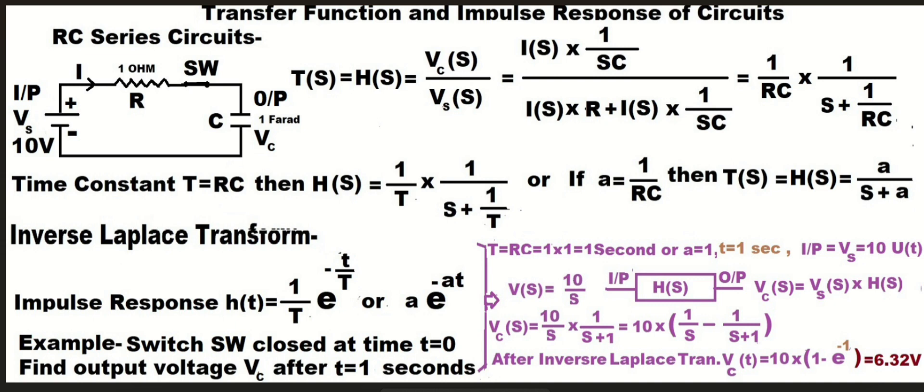After taking inverse Laplace transform, impulse response h(t) equals 1 upon T multiplied by e raised to power minus t upon T, or a multiplied by e raised to power minus at. When the switch is closed at time t equal to 0...